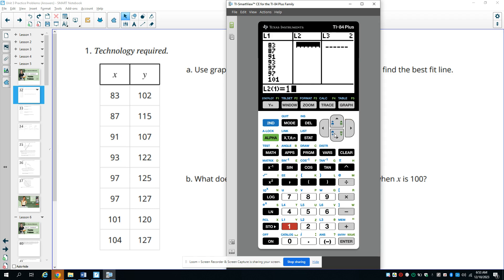Then you're going to move over to list two and type in your y values. So make sure that they have the same number of data points entered, and then that all of your data points are entered correctly.